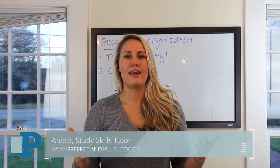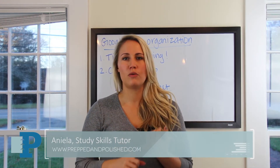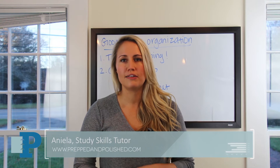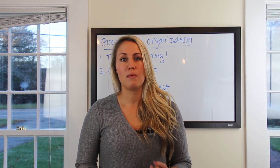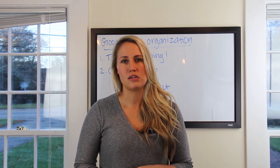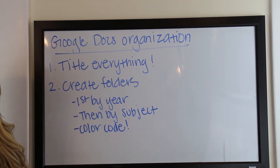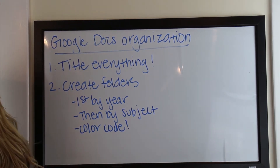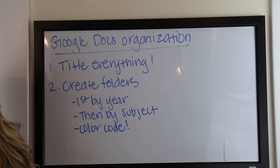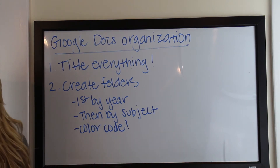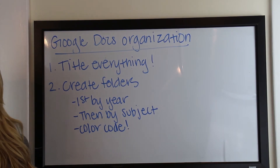Oftentimes you will get tons of Google Docs shared with you, or you create new things every single day, and keeping those things organized is going to be really important to keeping track of them and being able to find them easily when you need to. So the number one thing you're going to want to do is title everything. Every document when first created comes untitled and we oftentimes leave them untitled. This is a mistake because when you go to search for it you're going to have 17, 25, etc. documents that are all untitled and being able to find what you actually want to work on is going to be very difficult and time consuming.